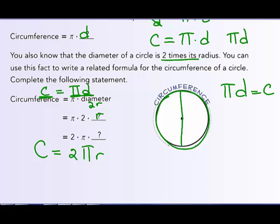Some people remember the formula as 'cherry pies are delicious' — circumference equals pi times diameter.